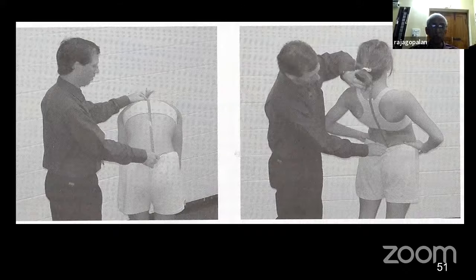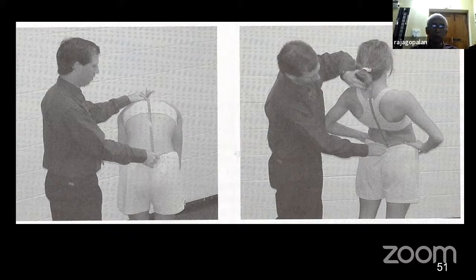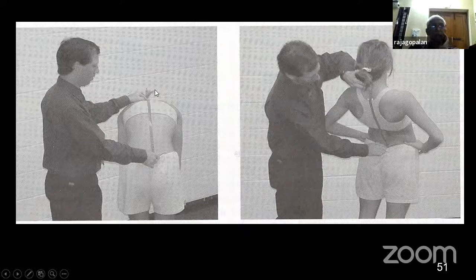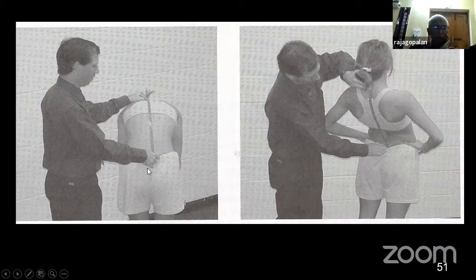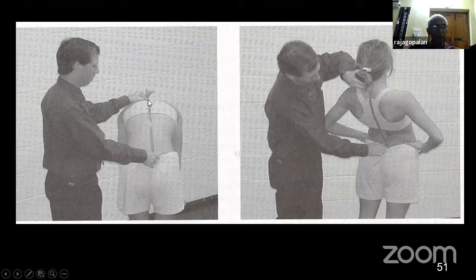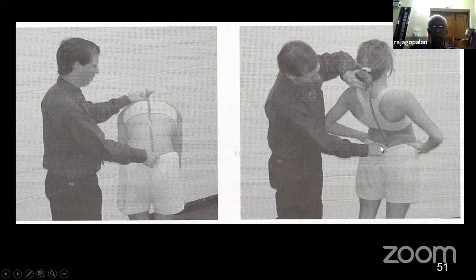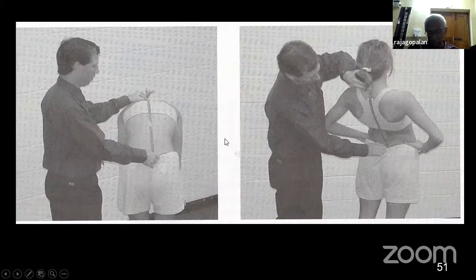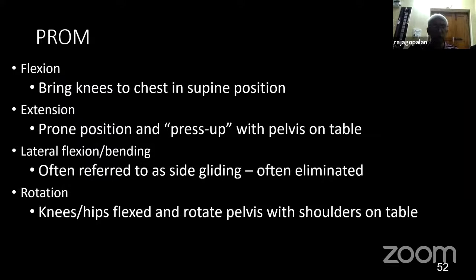Coming to measurements of movements: usually we do only Schober's test, which is mainly for lumbar spine movement. Sometimes in ankylosing spondylitis we measure the whole spine. Make the patient stand straight, measure the distance from the most prominent vertebra to the midpoint of the PSIS line — ask them to bend maximally and measure the distance again to see how much the spine moves. That is spinal flexion. You should know only about the Schober's test.